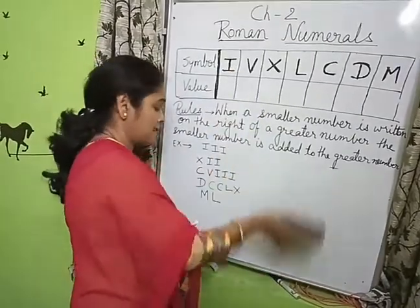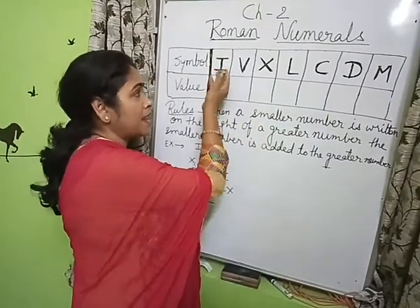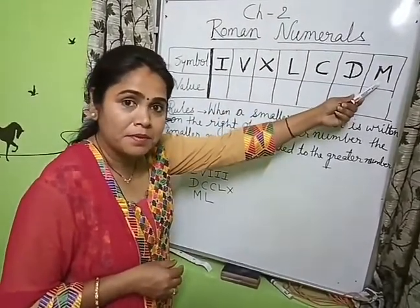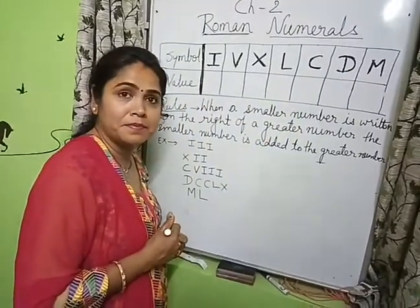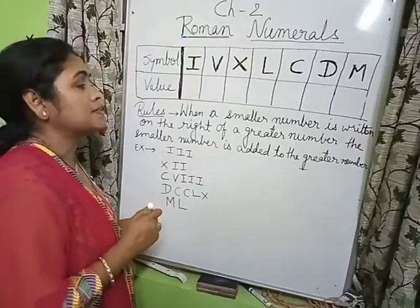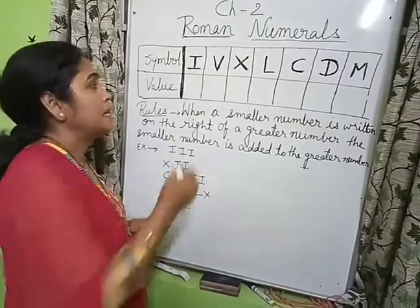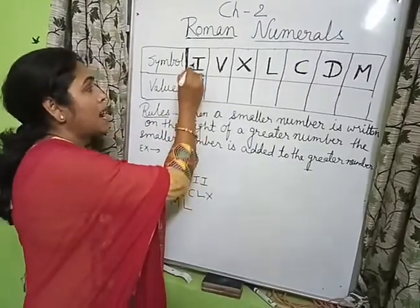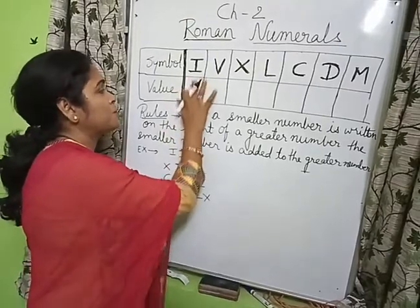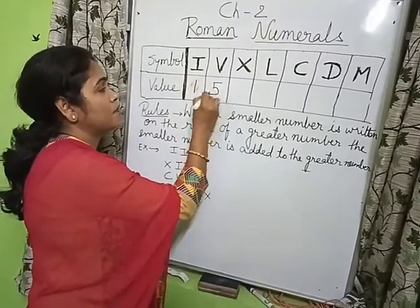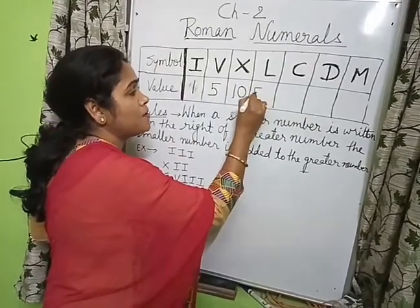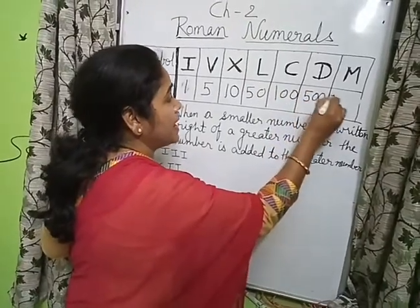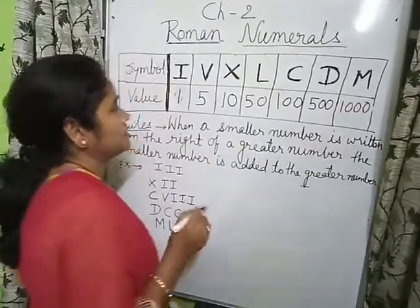But in Roman Numerals we will use totally different symbols. Here the symbols are alphabets: I, V, X, L, C, D, M. We will learn the rules to write them. Each symbol shows one value — I shows 1, V shows 5, X shows 10, L shows 50, C shows 100, D shows 500, and M shows 1000.